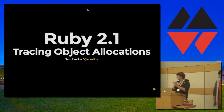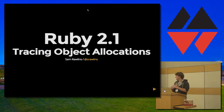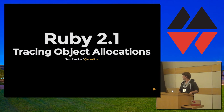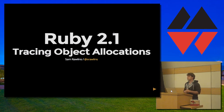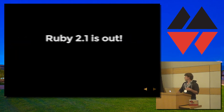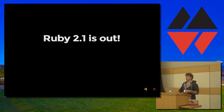Hey guys, I'm Sam Rollins on the last talk before lunch, so I'm going to make this as fast as I can. I may have packed more than I should have into this. My talk is going to be on a new feature in Ruby 2.1 called Tracing Object Allocations. It's super exciting. Ruby 2.1 is out — raise your hand if you've installed it or used any new features in Ruby 2.1. That's a better adoption than Ruby 1.9 when it came out.